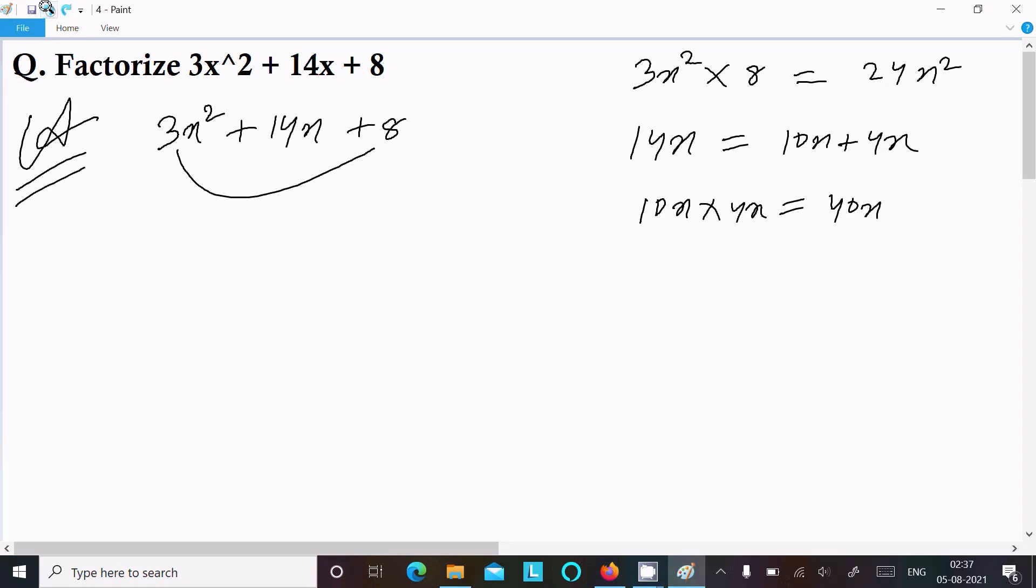Now another way: 14x we can write as 11x plus 3x, it equals to 14x. And when I multiply 11x into 3x, it comes to 33x². 33x² and 24x² both are not the same, so we cannot take this one.